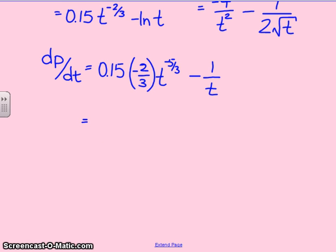And so, simplifying this, I end up getting 0.1. Missing a negative sign there. Sorry. Negative 0.1 divided by t to the 5 thirds. Now, I'm okay with you not putting that back into the square root notation, but if you want to put it back into that square root notation, go for it. Minus 1 over t.